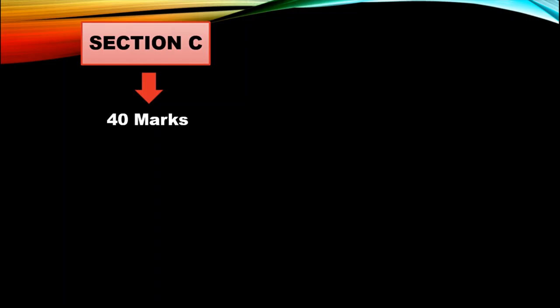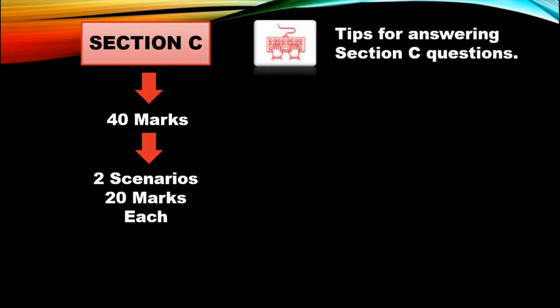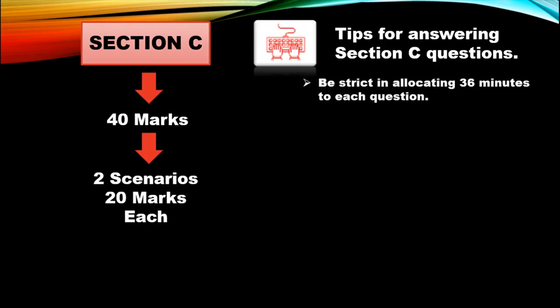Section C is a 40-mark section divided into two scenarios of 20 marks each. The first tip for Section C is to be strict in allocating 36 minutes to each question, meaning 72 minutes — that is one hour and 12 minutes — for the two Section C questions combined.